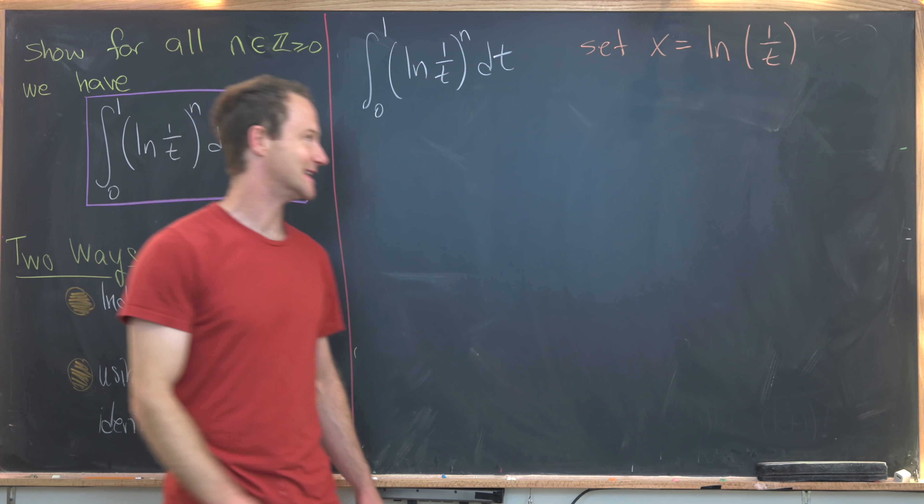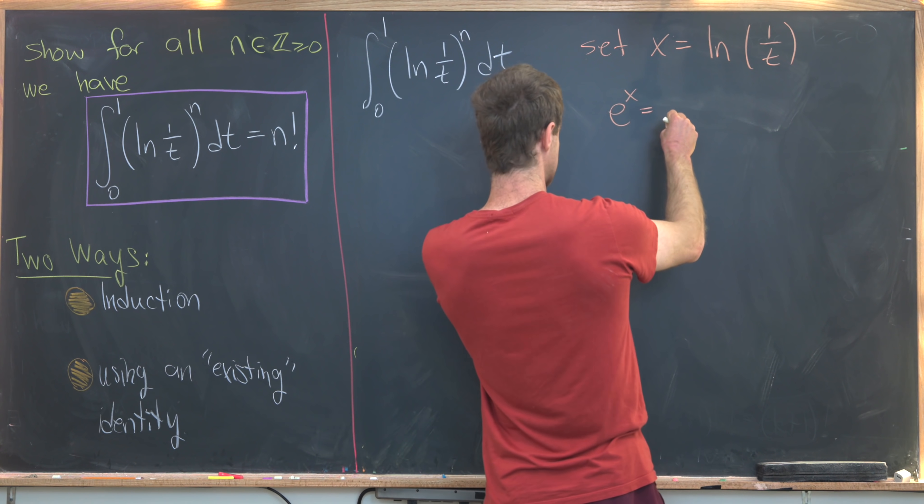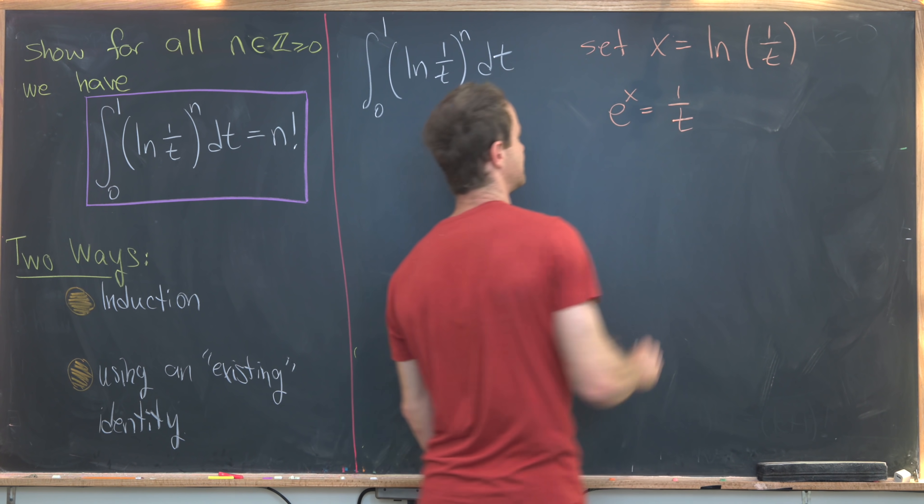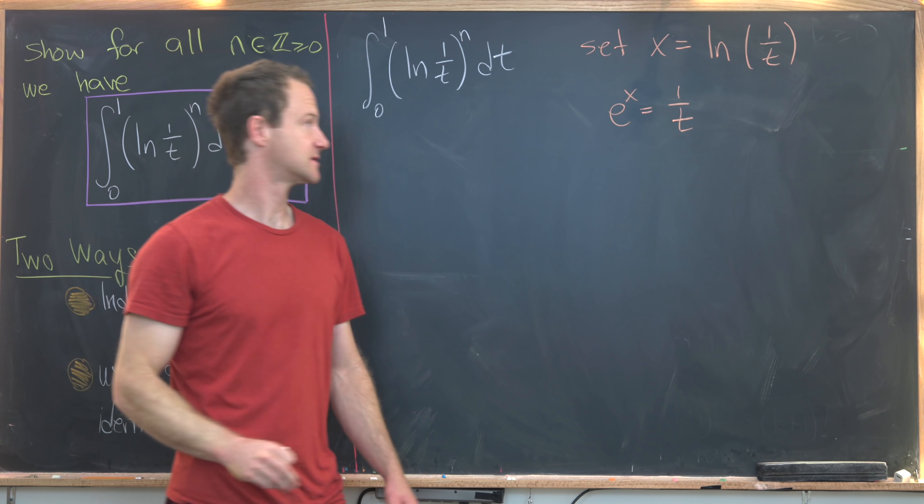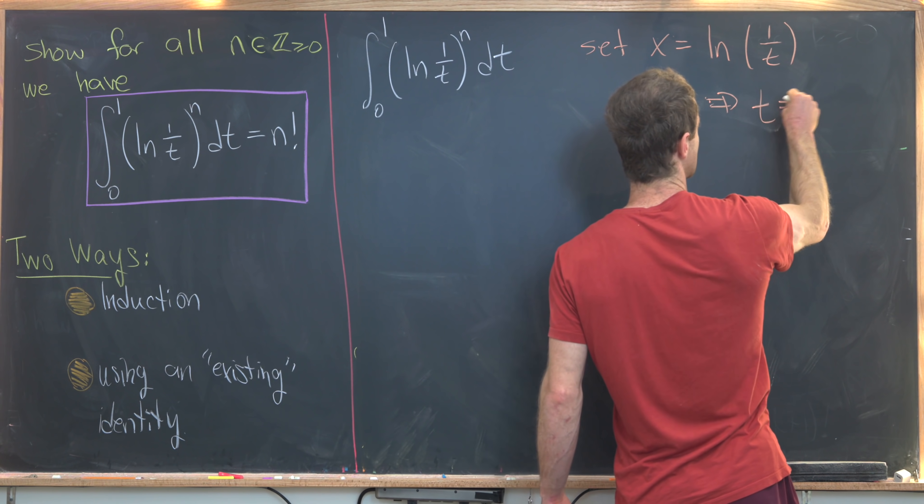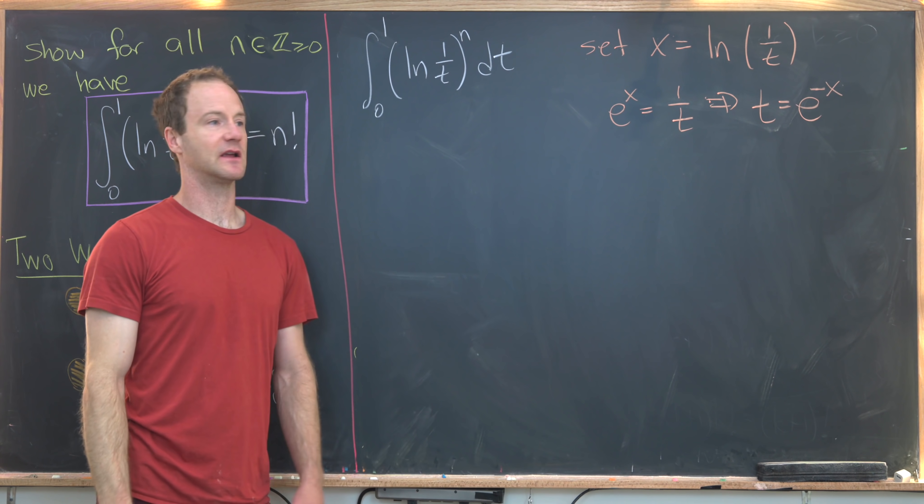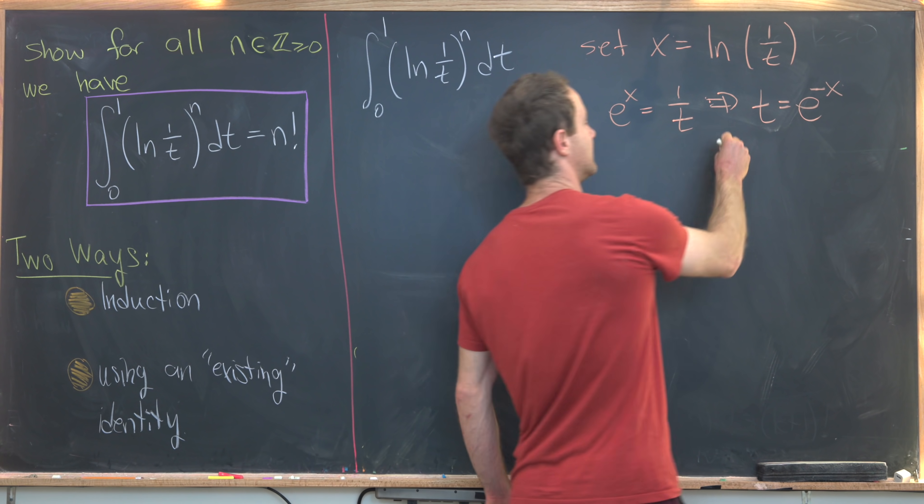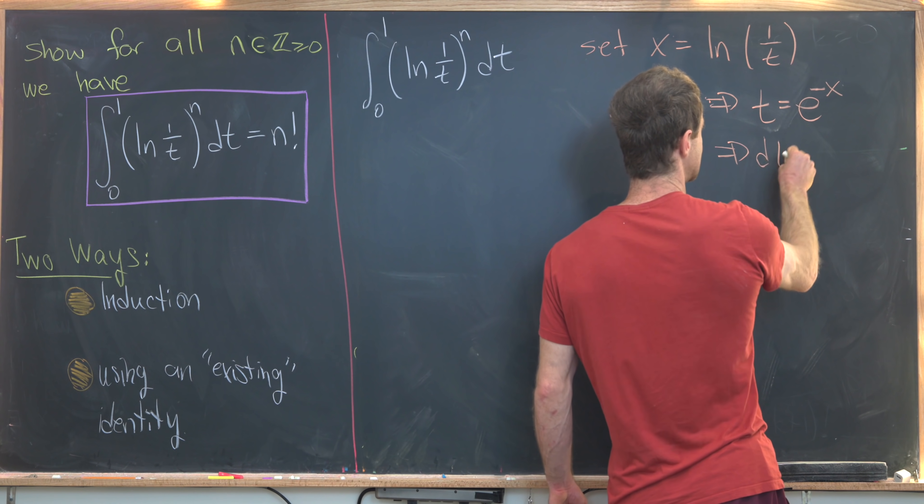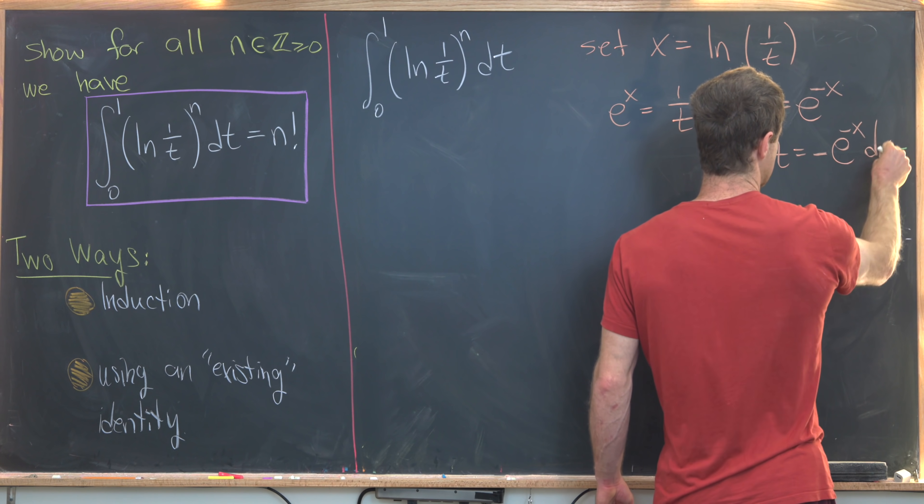Now let's solve that for t and see what we get. So that means that e to the x is 1 over t, just exponentiating both sides. But that means that t is equal to e to the minus x. We get that just from taking the reciprocal of both sides. Then finally, that tells me that dt is equal to minus e to the minus x dx.